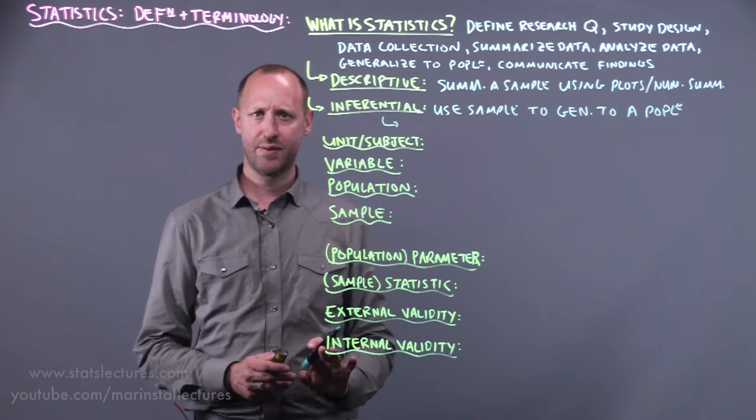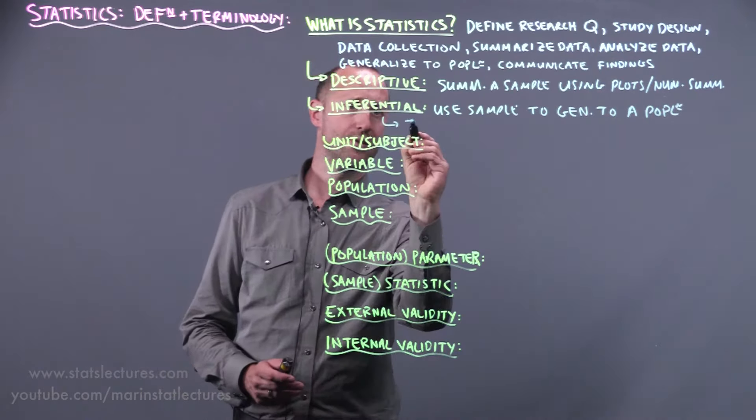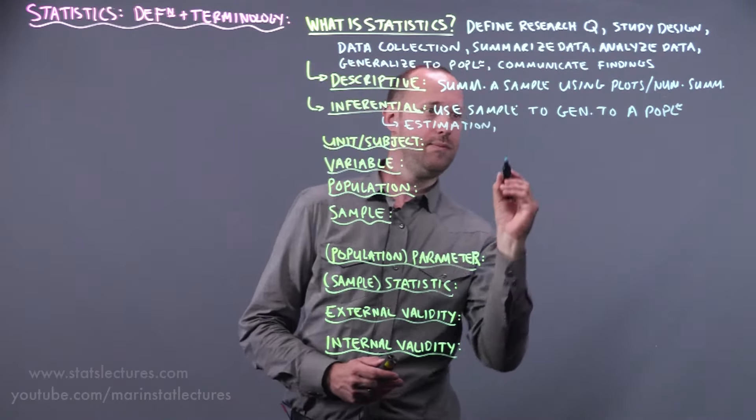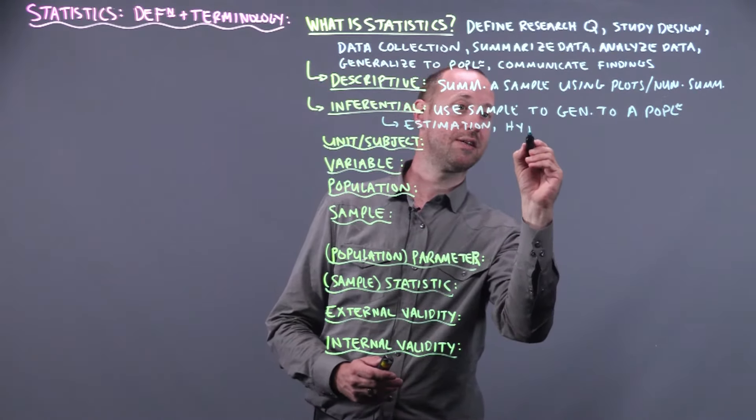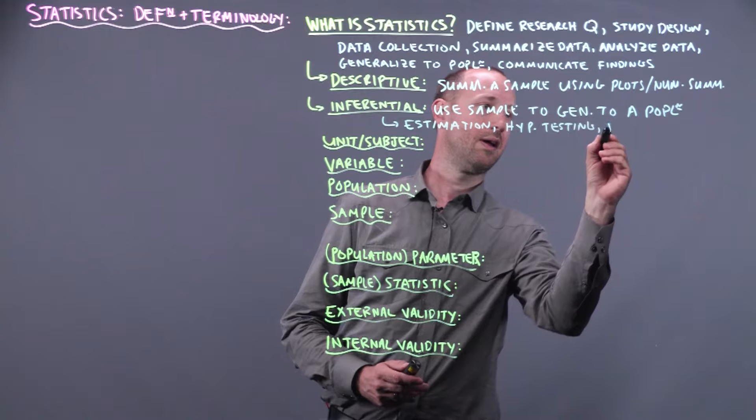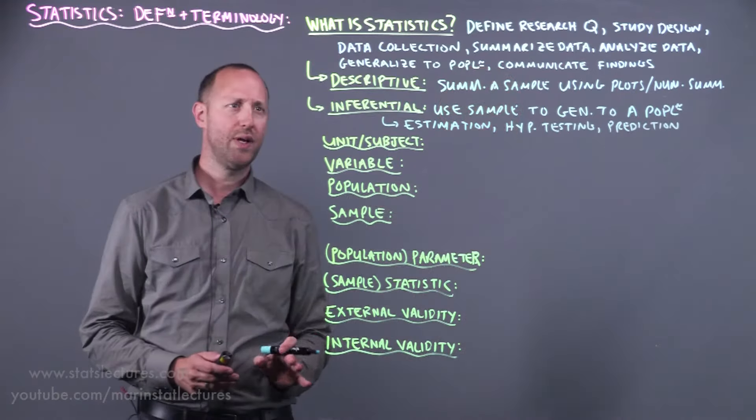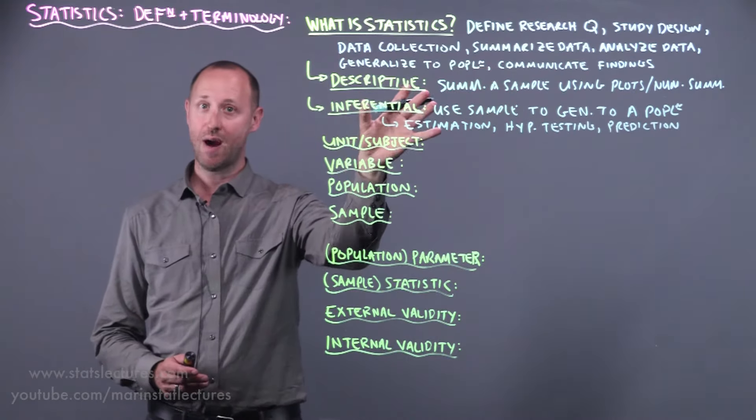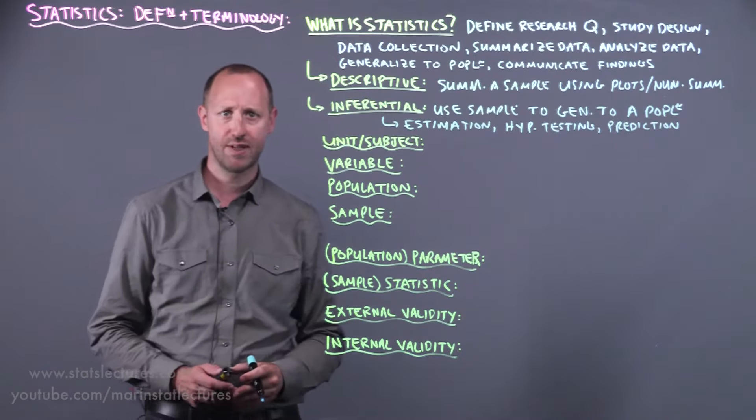This generally can be broken down into three sorts of areas. There's estimation, there's hypothesis testing, and there's prediction. Before doing any inference we generally need to describe the data or summarize that and then we can use that to do inference.